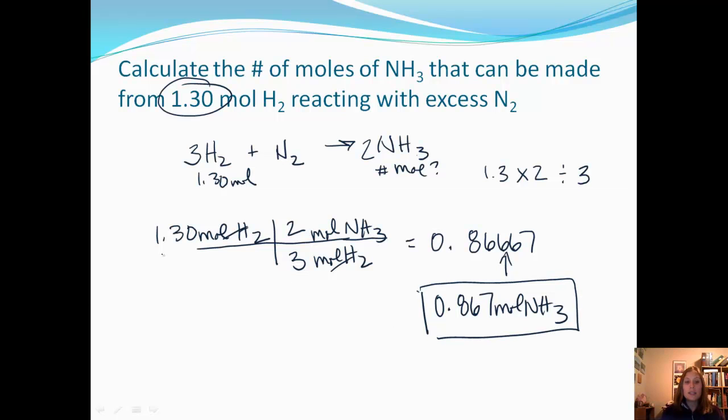Given this quantity of hydrogen, I'm going to produce 0.867 moles of NH3, and that's all based on this balanced chemical equation and that ratio. We'll do some practice, and if you have any questions, please let me know. Otherwise, have a good day.